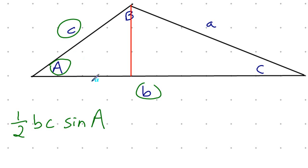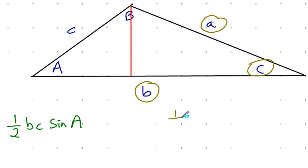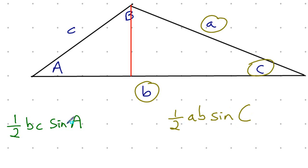That was what we learned from the previous unit. Now we can iterate and spin this triangle around. If given side A, the value of side B, and the angle between those two values, the area of this same identical triangle would be one half A times B times the sine of big C. Since this is the same triangle, both expressions have to be equivalent — it just depends on what sides and angles we're working with.